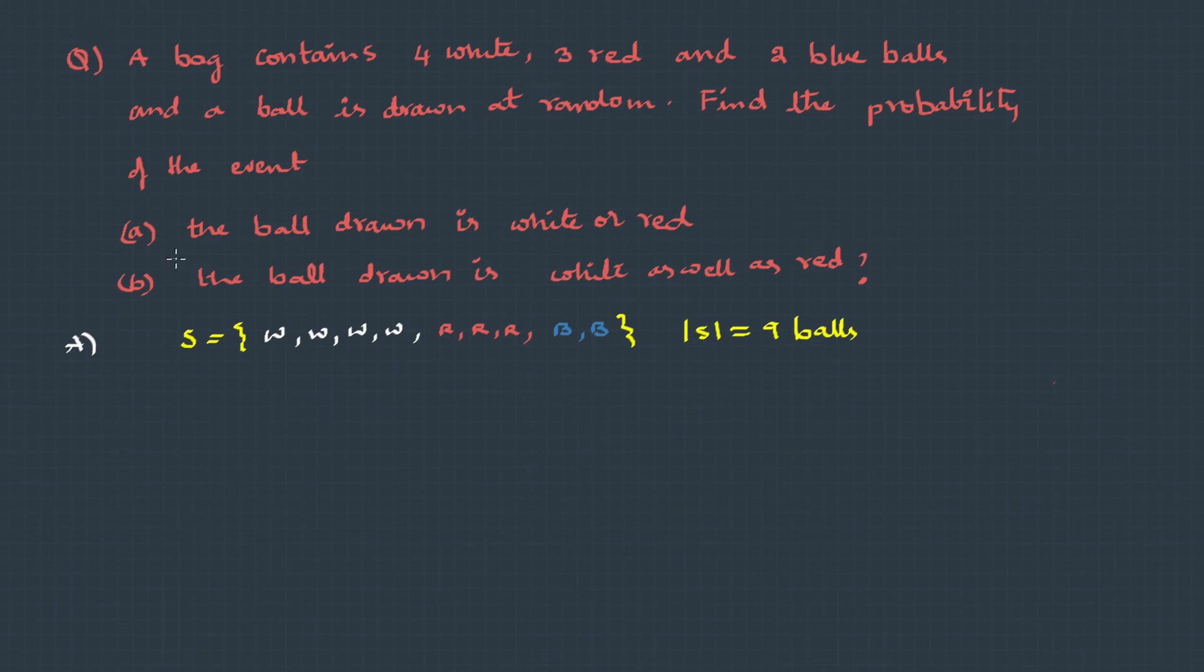And the event in the first part is the ball drawn is white or red. Here 'or' can be thought of as union. Therefore we can say the probability of the event is probability of white union red. And getting a white or red, these are mutually exclusive. Therefore we could write this as probability of white plus probability of red. That is, getting a white is 1, 2, 3, 4 — 4 possibilities out of 9 balls.